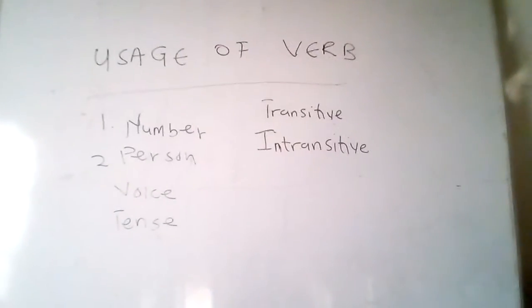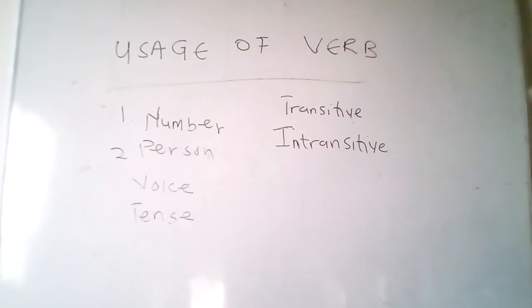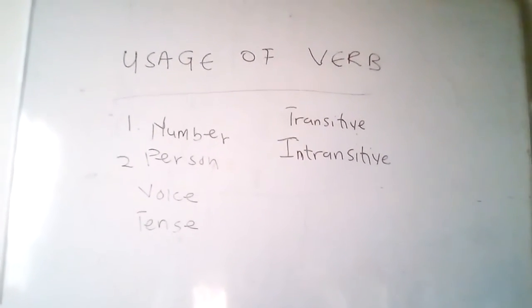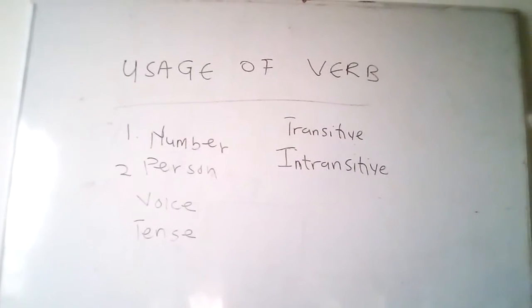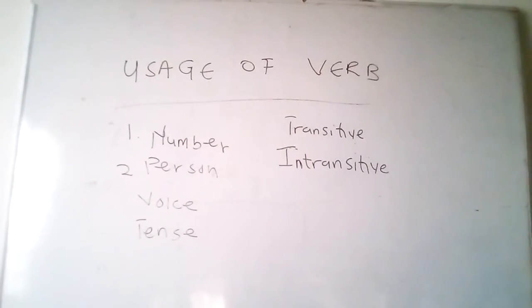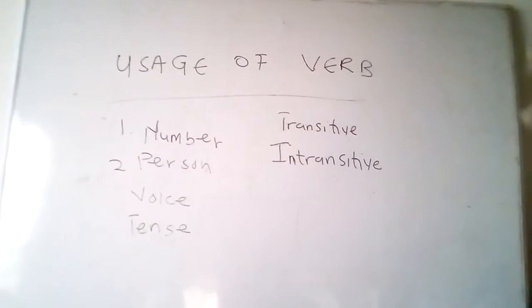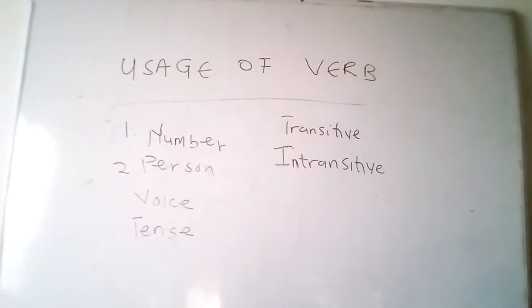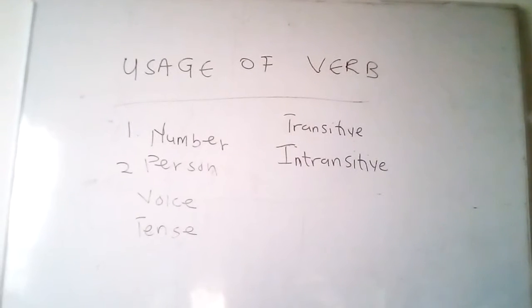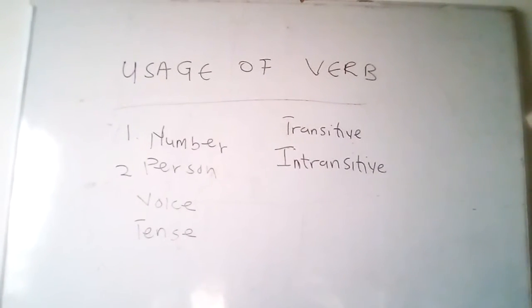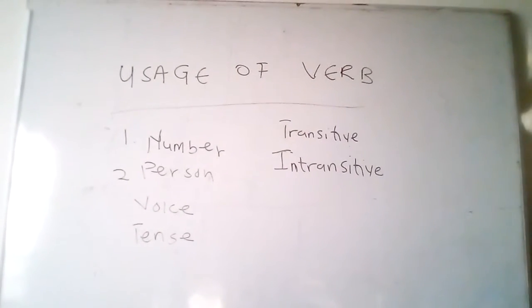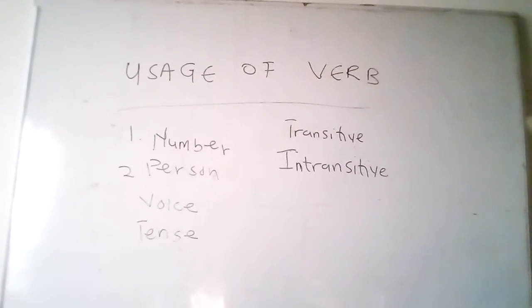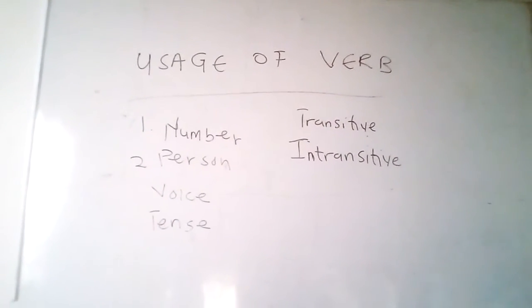When to use the passive voice: Number one — when what is done, the action, is considered to be more important than who did it, the doer. The emphasis is on the receiver or sufferer of the action rather than the doer. Example: 'My car was stolen by a thief.' 'A television set was repaired by the man.'